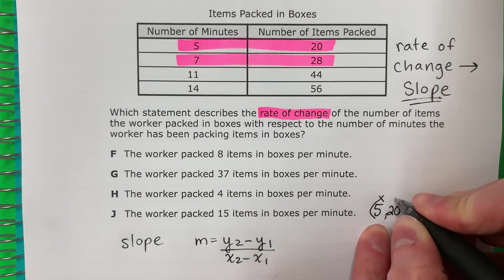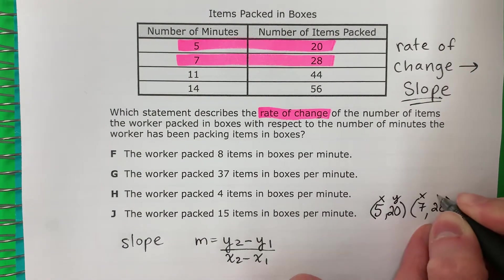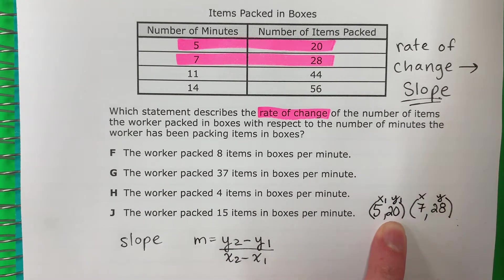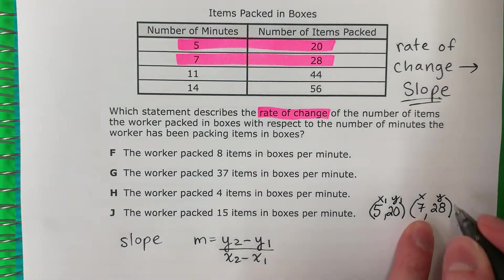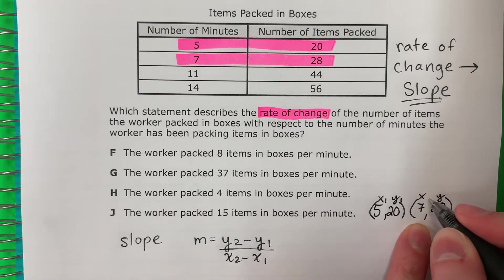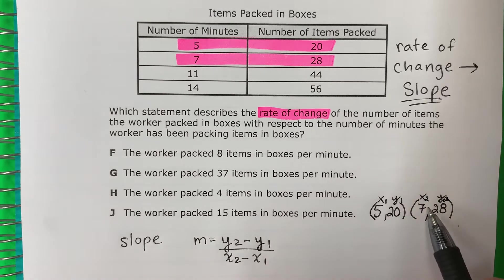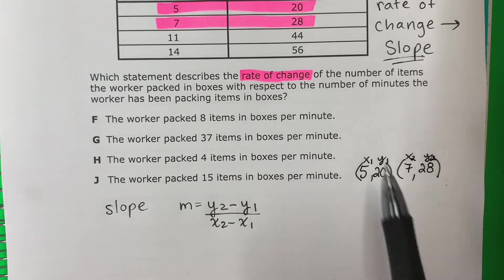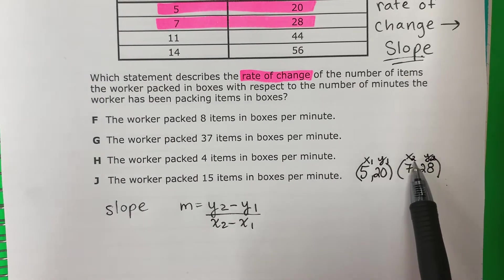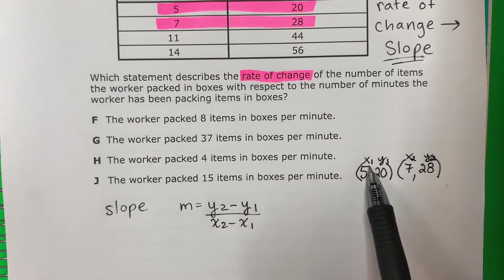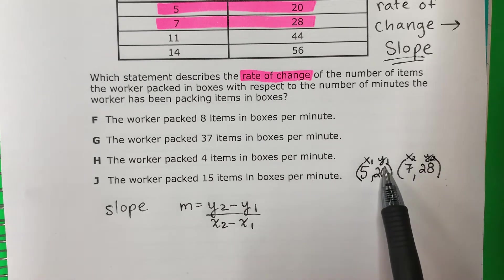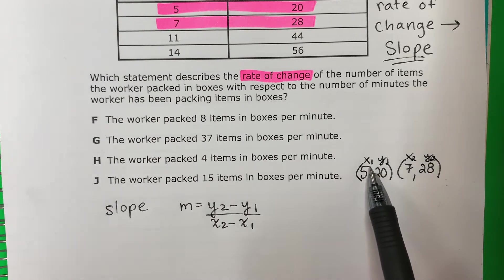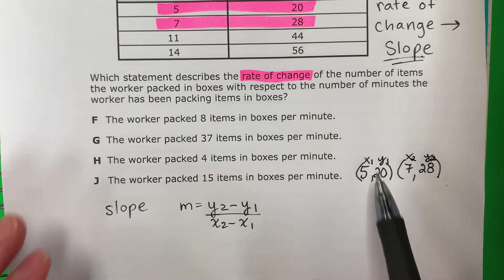This is x, y, x, y. This is my first pair, mi primer par — so my first x, my first y. Mi primer x, mi primer y. This is my second pair, mi segundo par — so my second x and my second y. Mi segundo x y mi segundo y. So: x1, y1, x2, y2. Please, no mixing x1 with y2. Por favor, no x1, y2.